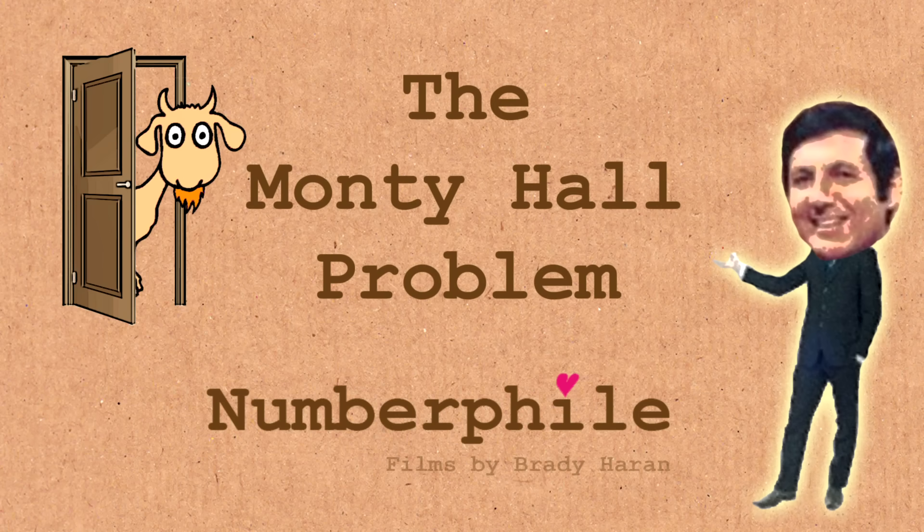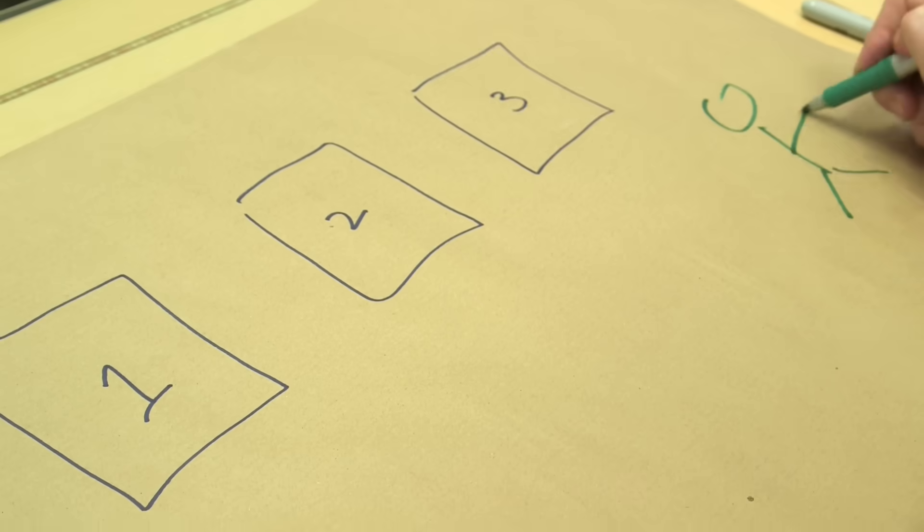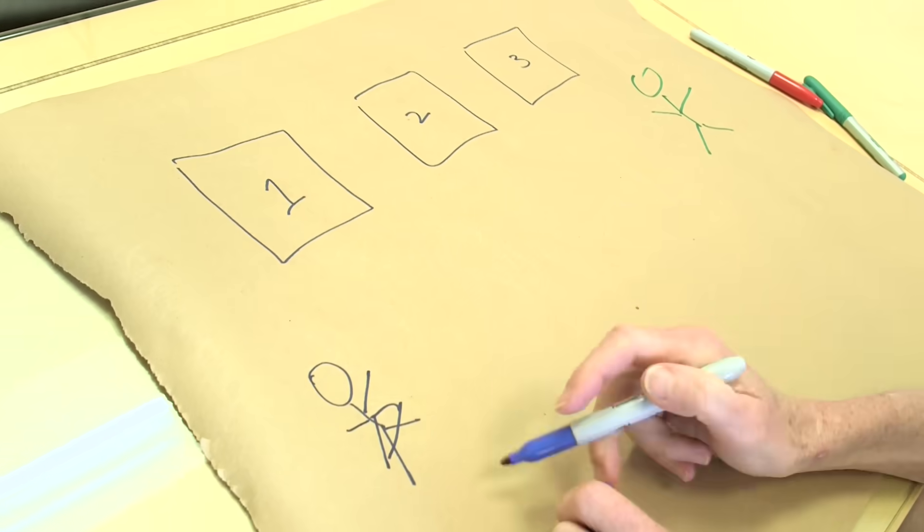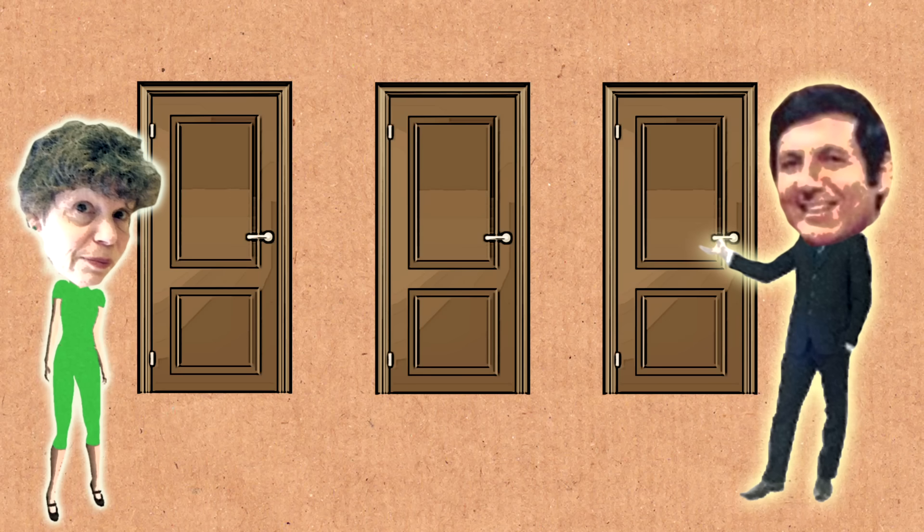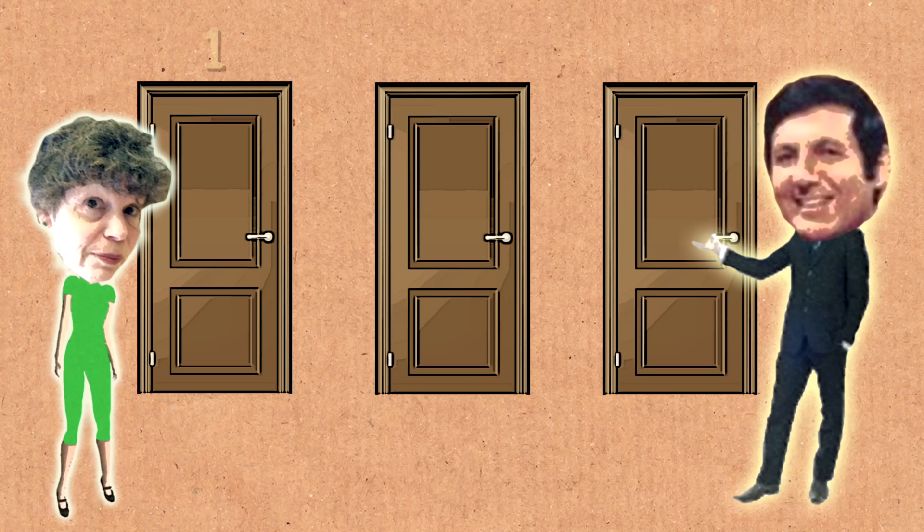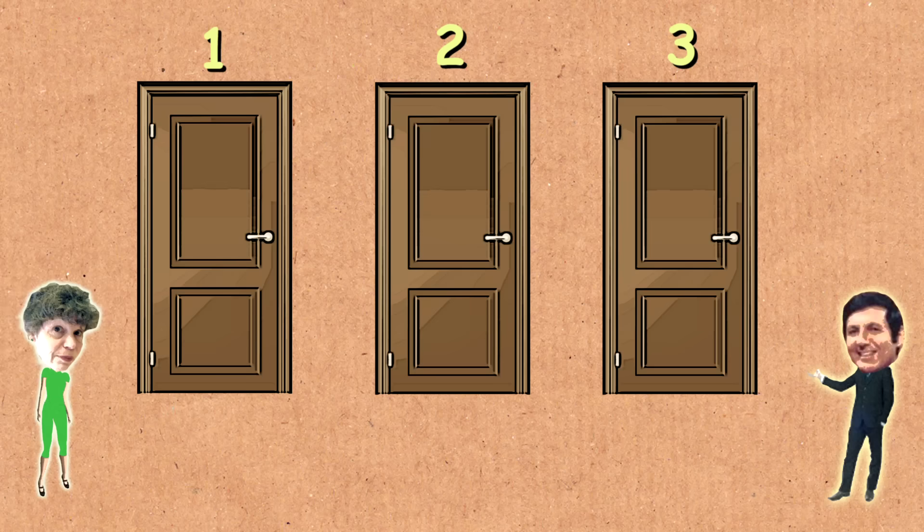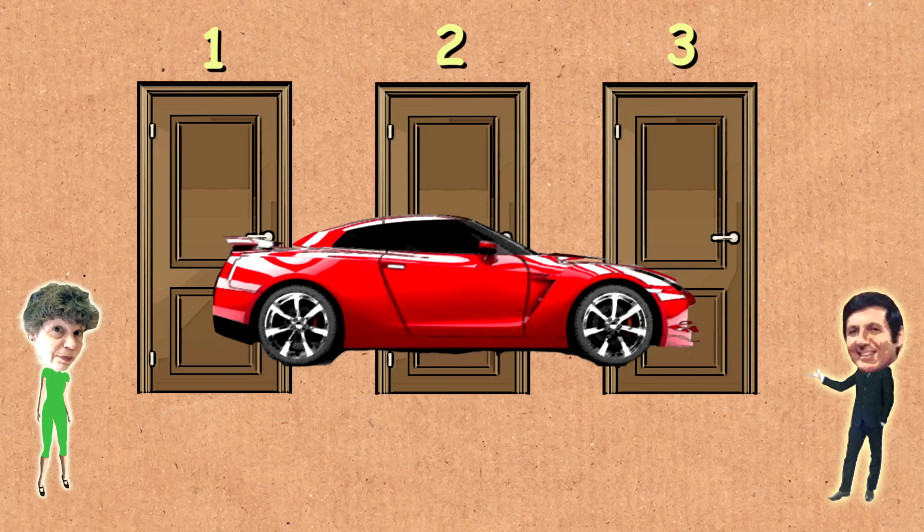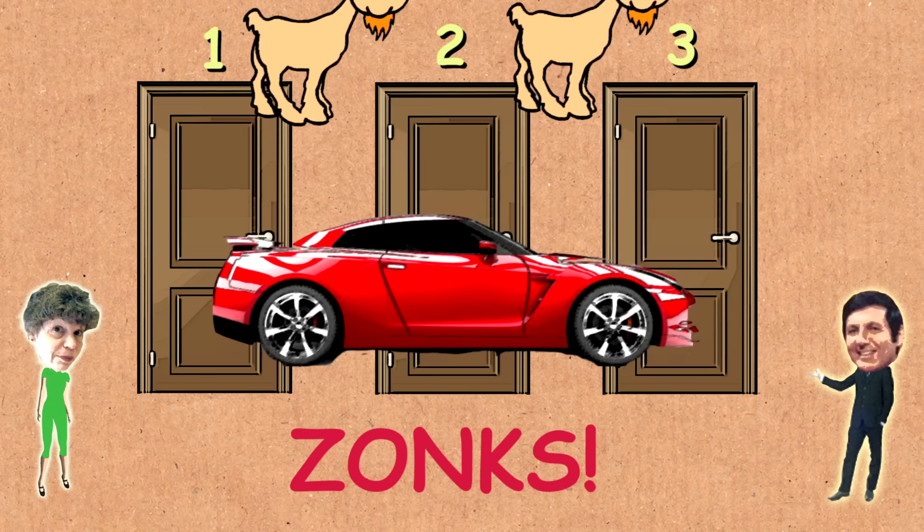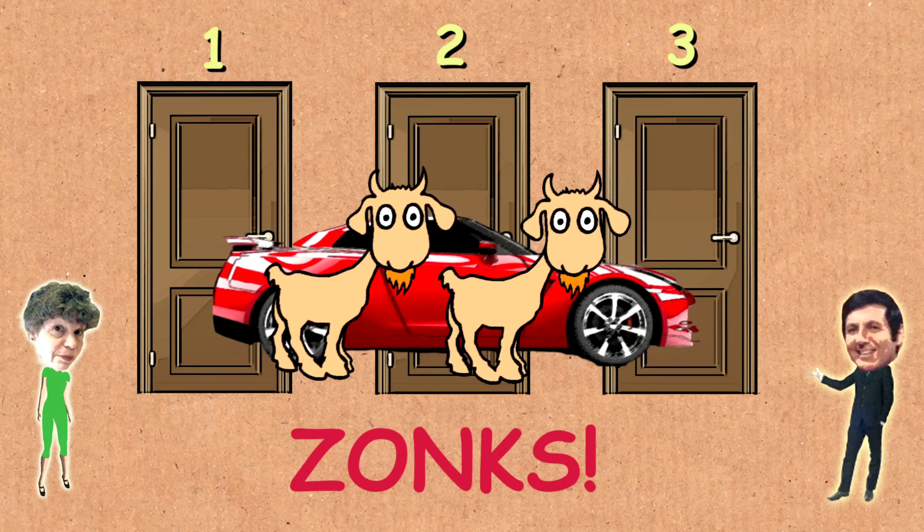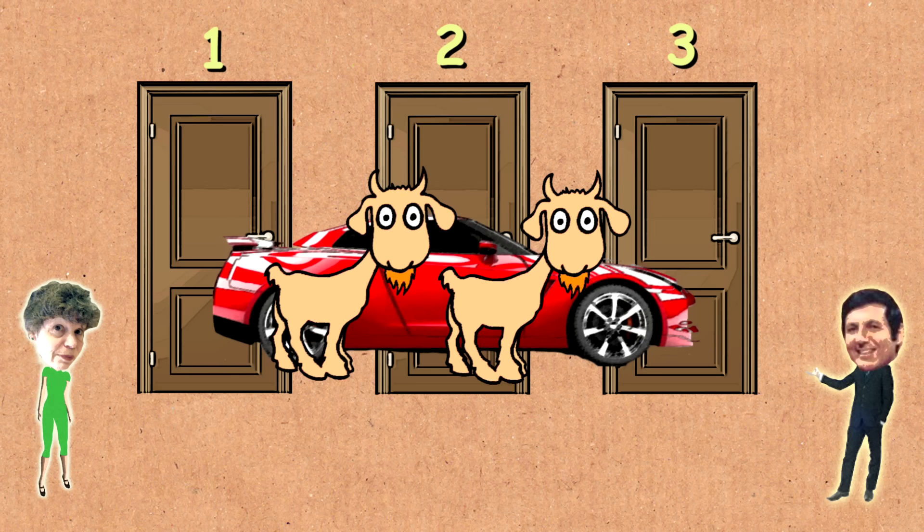Monty would come on to the show and he would have three doors. A contestant, that's you, would come on to the show. Monty would give you the chance to choose door number one, door number two, or door number three. Behind one of those doors, only one, was your dream flash car. Bright red sports car, very fast, it was awesome. And behind the other two doors were zonks. That was the Let's Make a Deal word for something that you don't really want. So you had a one in three chance of getting your dream car.